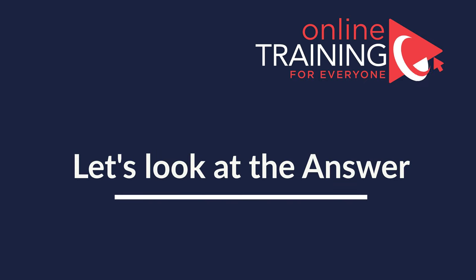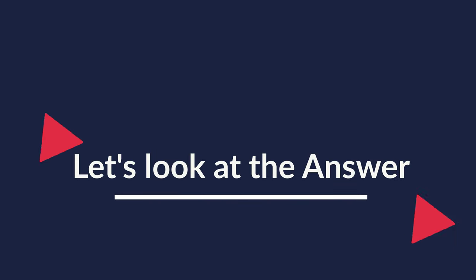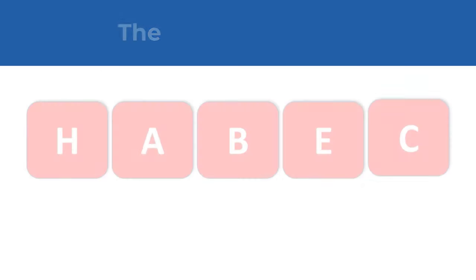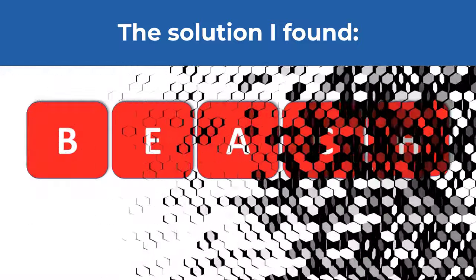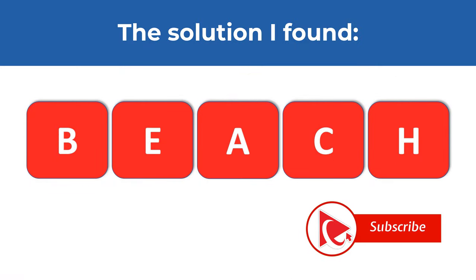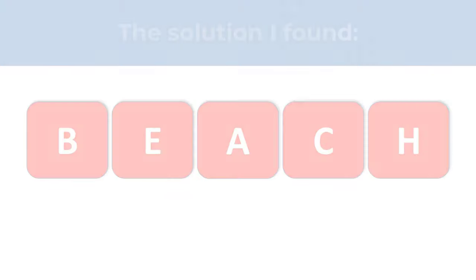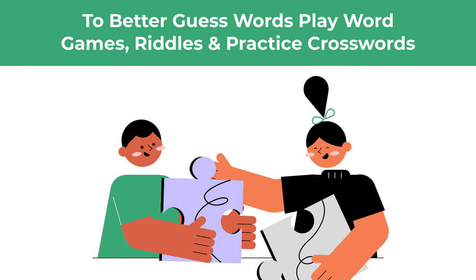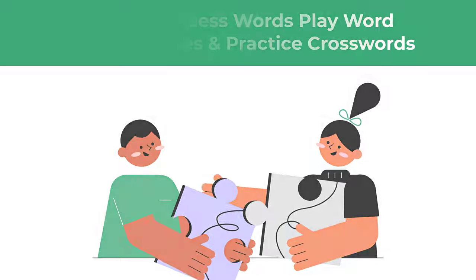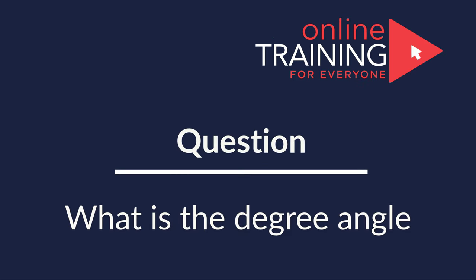Keep in mind that a lot of times multiple words can be formed, so if you see another word please share it in comments. The solution I found is the word BEACH — spelled B, E, A, C, H. If you'd like to improve your ability to form words, you can play word games, read a lot, and practice crosswords and puzzles.